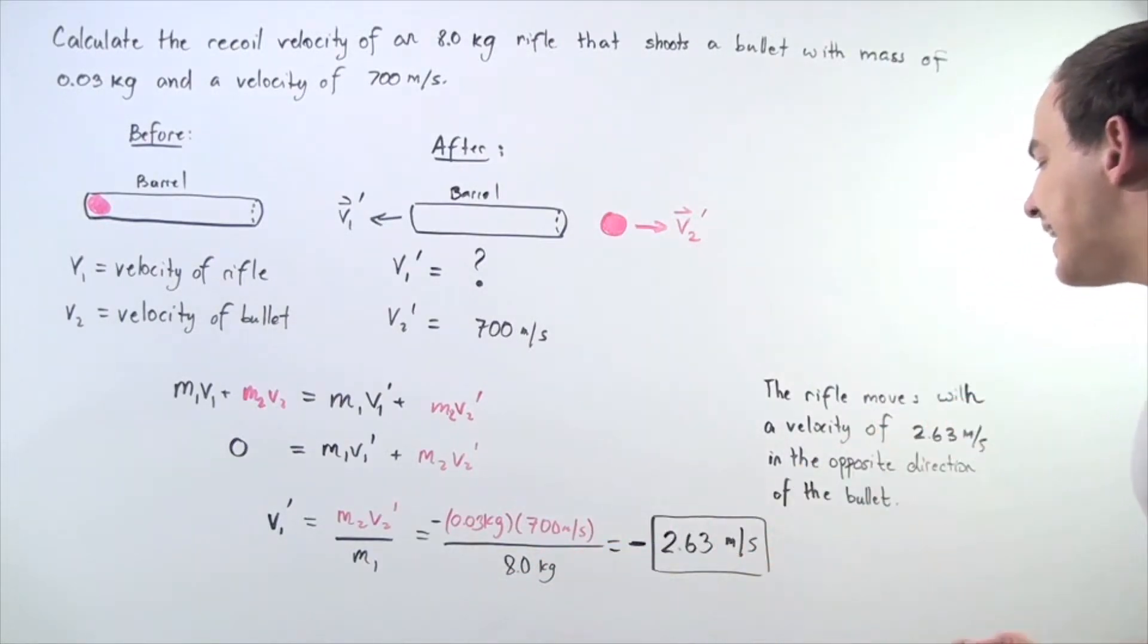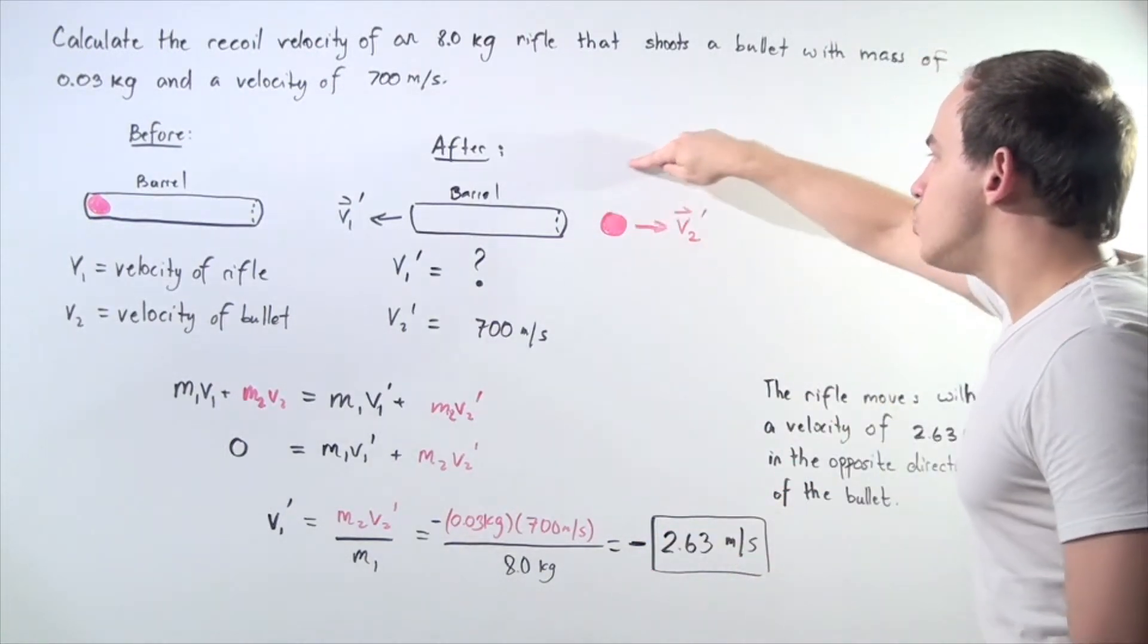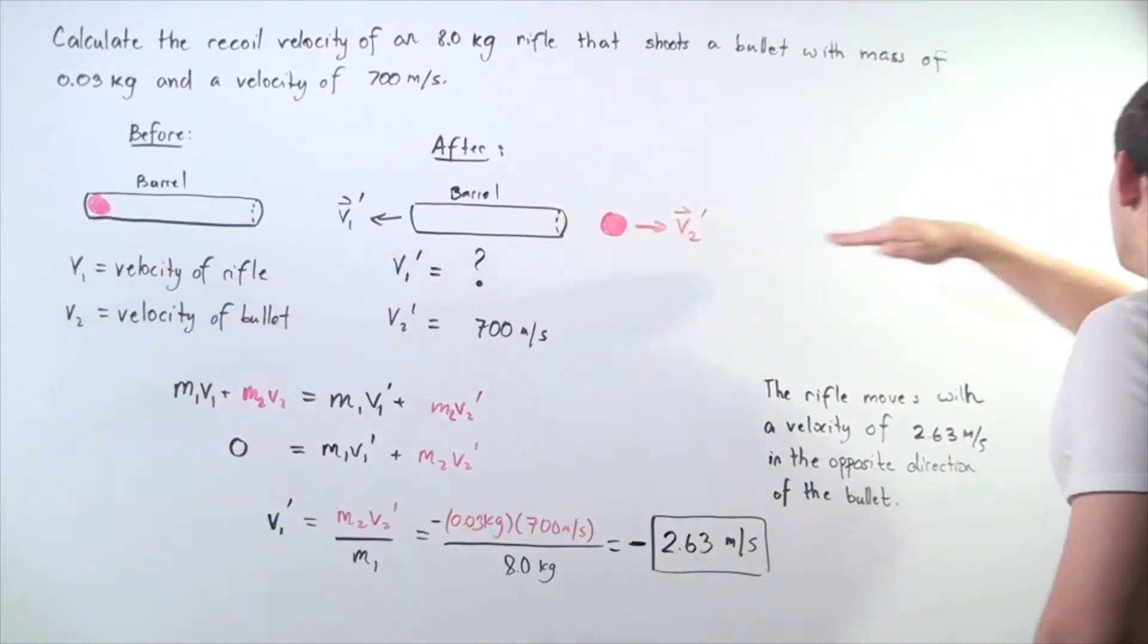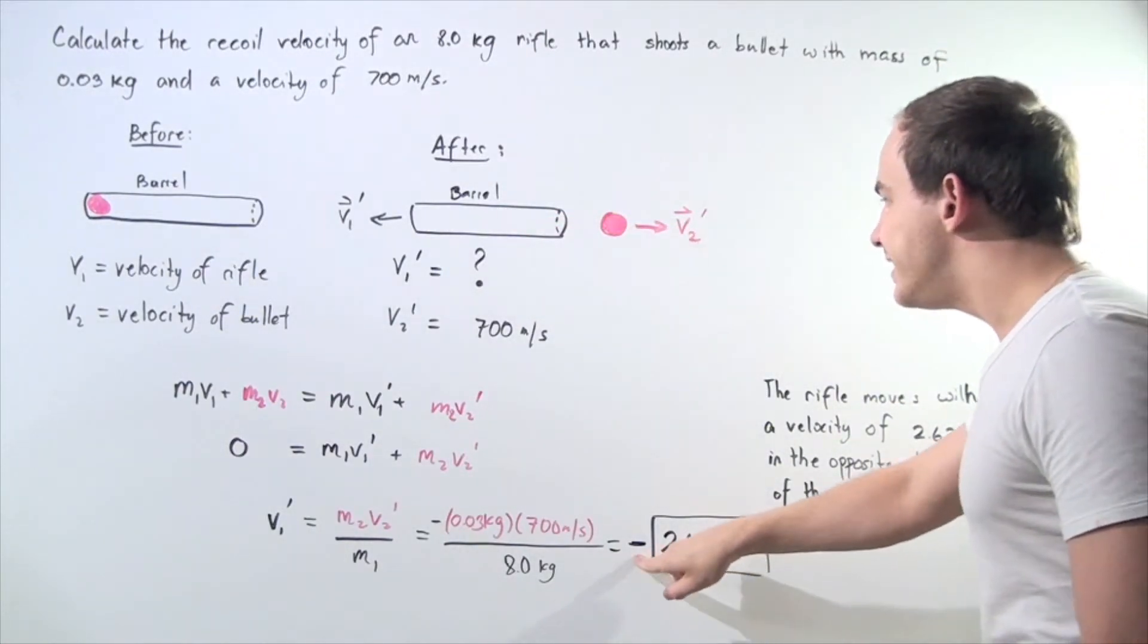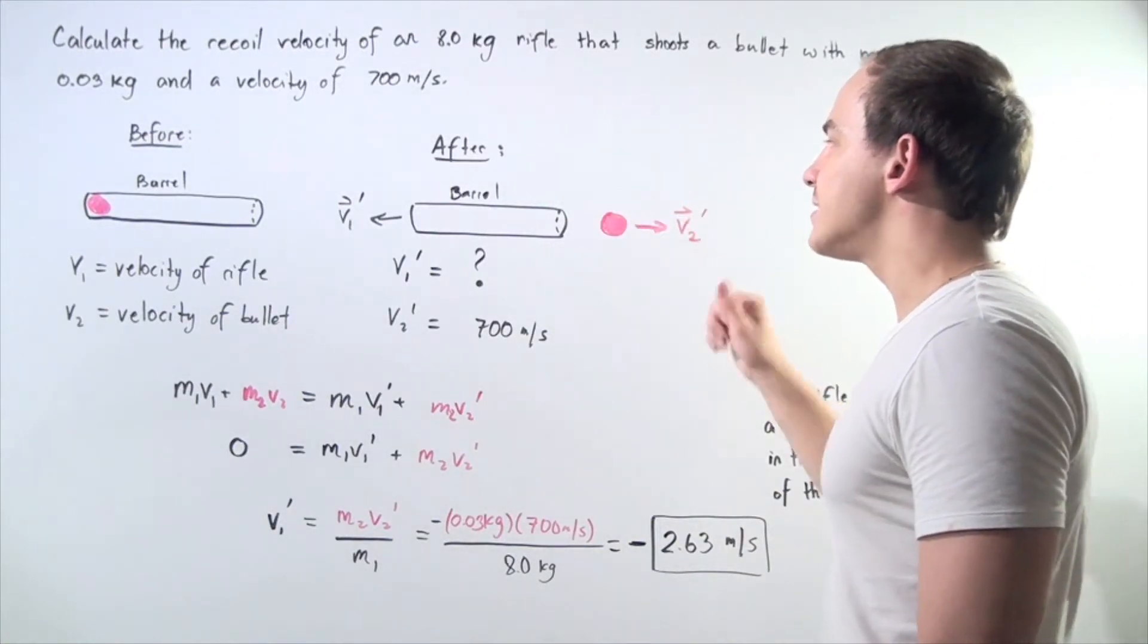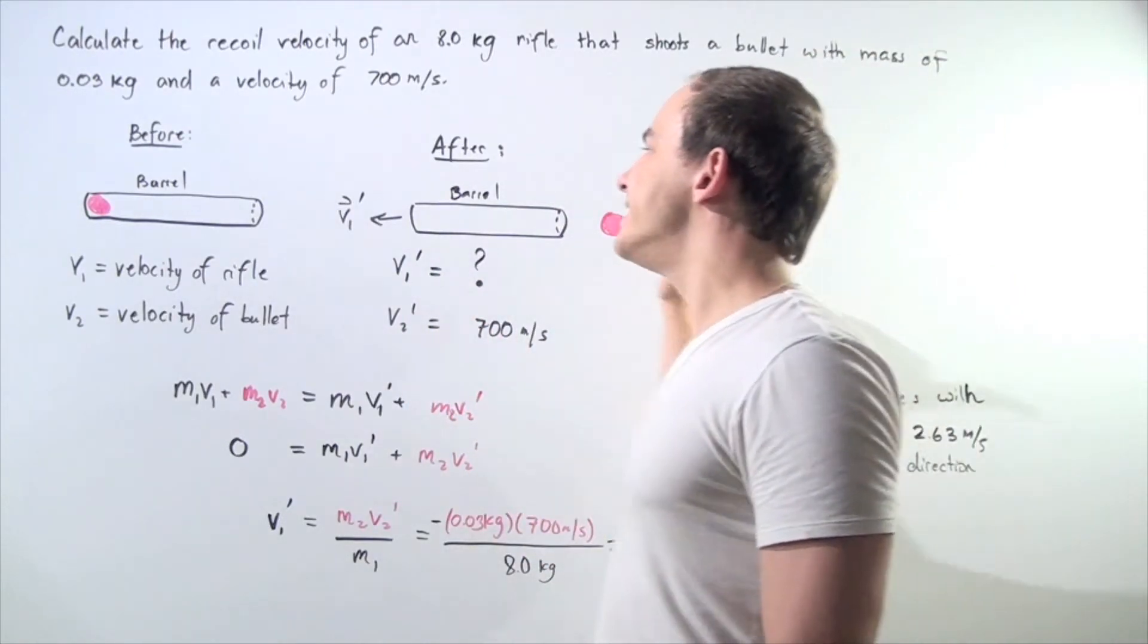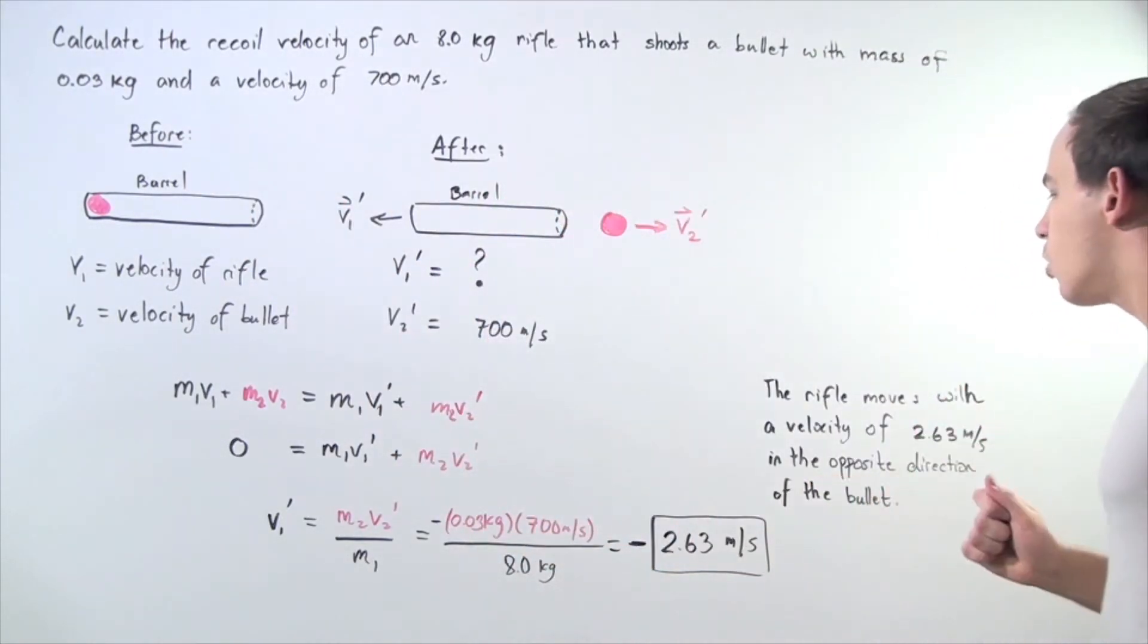We get negative 2.63 meters per second. The negative simply means that if we choose this direction along the positive x-axis to be positive, then the recoil velocity points in the opposite direction of the bullet, in a negative direction along the x-axis.